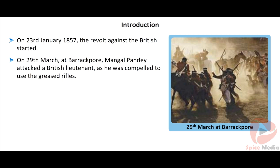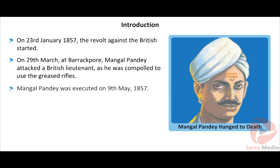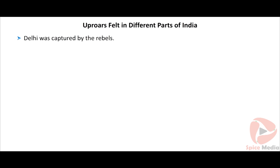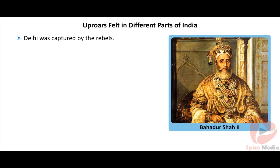In February 1857, the infantry at Barampur revolted against the British by refusing to accept the greased cartridges. On 29th March at Barampur, Mangal Pandey, a soldier, killed a British lieutenant who compelled him to accept the cartridge greased with the fat of pigs and cows. Mangal Pandey was executed on 9th May 1857. About 85 Indian soldiers were sentenced to long periods of imprisonment for revolting.